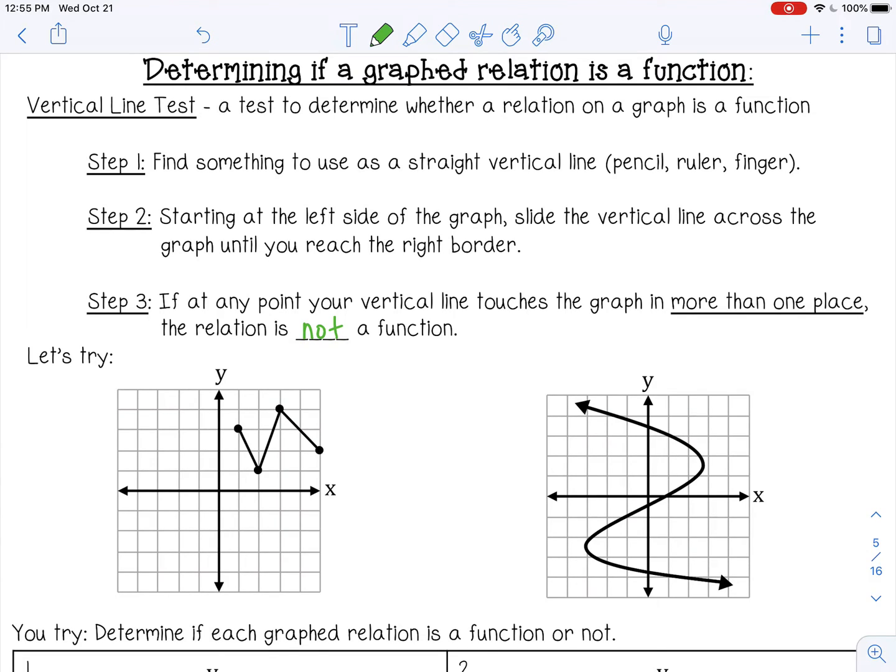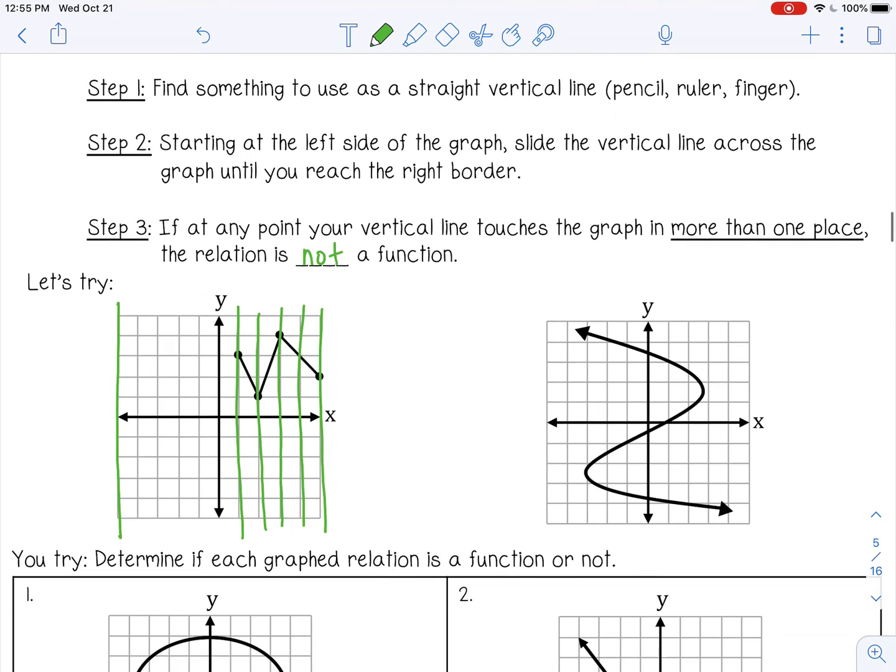Take a ruler, your pencil, or your finger, and mimic this line that I've drawn. Slide across the graph. The graph doesn't start until over here, so you're going to be sliding all the way, mimicking how I'm drawing. See if at any time your line is touching that graphed shape more than once. You should have gotten no, it doesn't. So if it does not touch more than once, that means it is a function. This is a function.